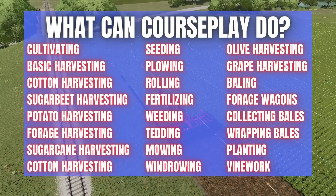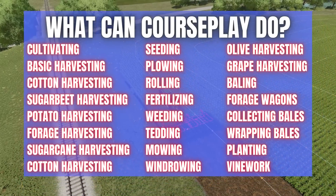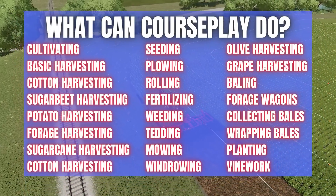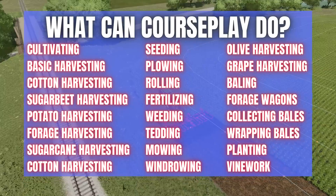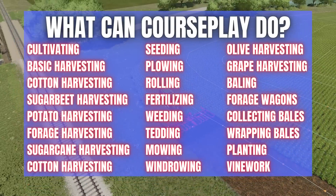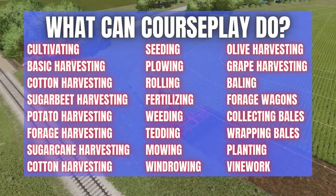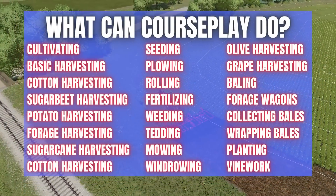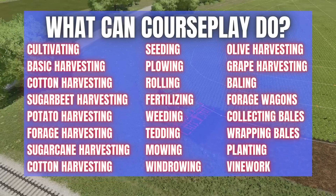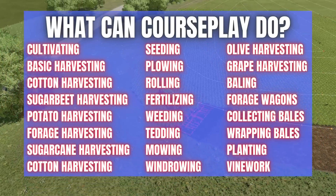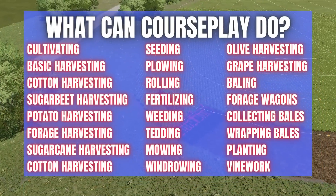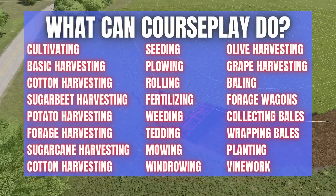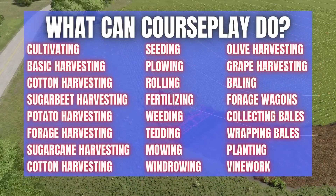Courseplay can do baling, forage wagons — you can use those to pick up stuff. It can do tedding and windrowing. It can also collect bales and wrap bales, though I'm a little skeptical of that but we'll try to get it to work. You can also do mowing. What it can't do is forestry work — it can't do forestry work or anything complicated like that.